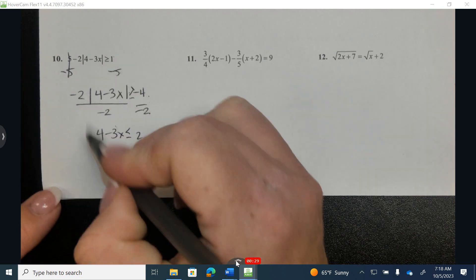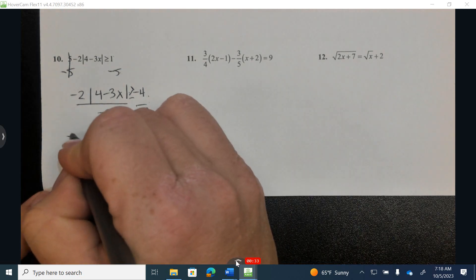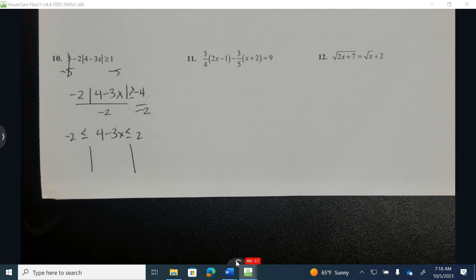I'm going to take this quantity and turn it into a compound inequality, taking this symbol right on the other side, and place the symbol in the same direction.